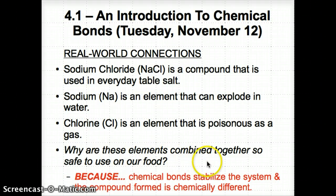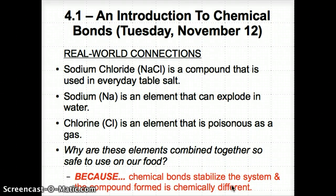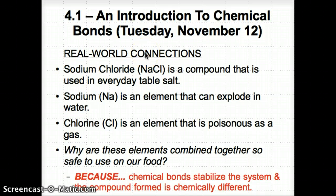So we have to wonder: why are these elements combined together so safe to use in our food? The reason is that chemical bonds make the system more stable, and the compound formed is chemically very different from the individual elements. That's why sodium and chlorine, when chemically bonded in sodium chloride (NaCl), is so safe — because NaCl is chemically different when bonded. It won't explode in water and won't be poisonous as a gas.